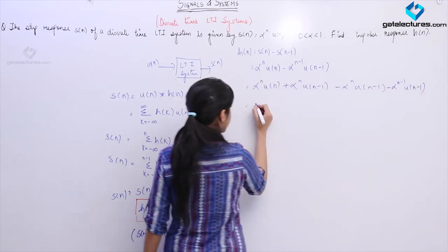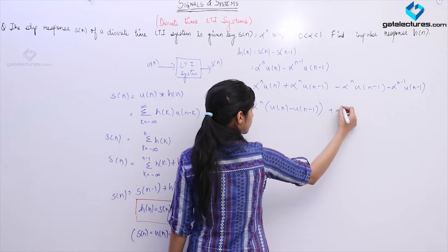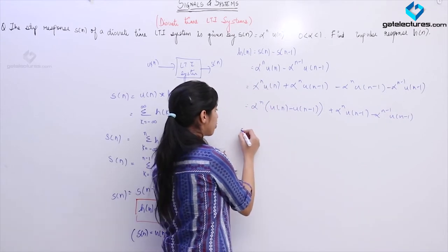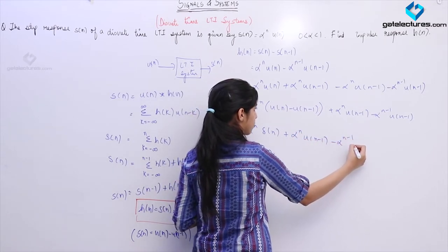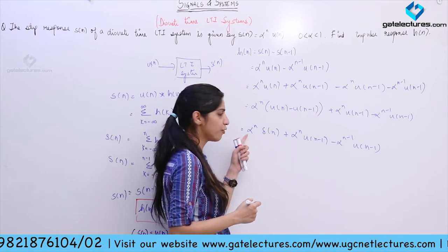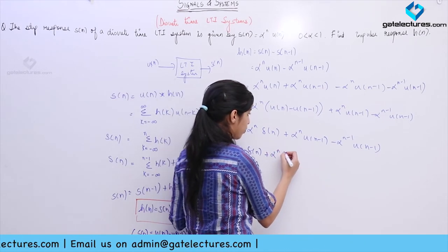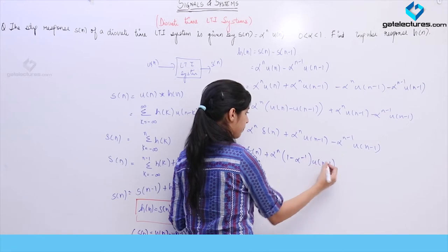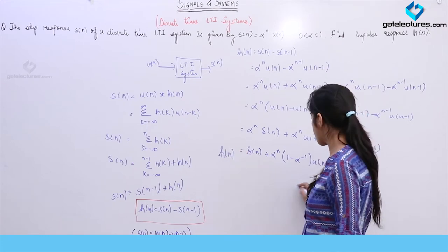If I just rearrange these terms, you know that U(n) minus U(n minus 1) is going to be delta(n). This gives alpha^n · delta(n) plus alpha^n · U(n minus 1) minus alpha^(n minus 1) · U(n minus 1). Using the multiplication property of the delta function, the value of alpha^n · U(n) at n equals 0 is 1. So this is going to be delta(n) plus, taking alpha^n common, we obtain the simplified result. This is our impulse response.